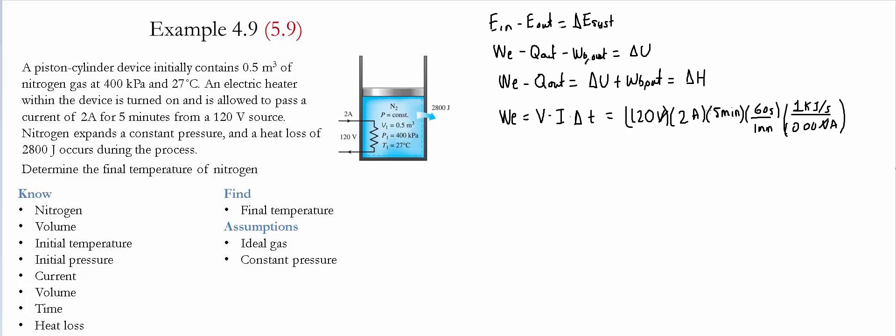Volts and volts cancel, amps and amps cancel, minutes and minutes, seconds and seconds. So we're left with the electrical work equal to 72 kilojoules.